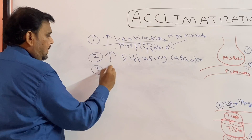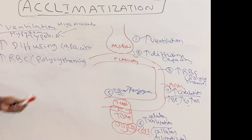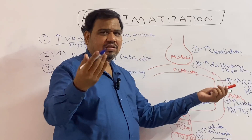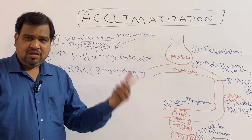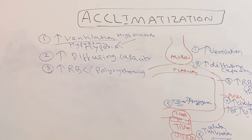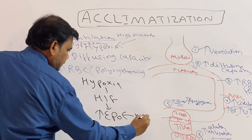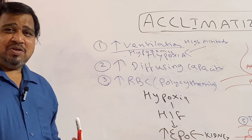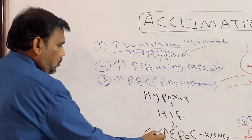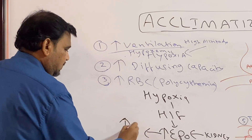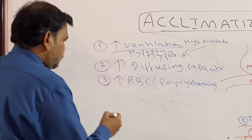Coming to the third point — RBC production, which is polycythemia. RBC production is increased; once RBC is increased, hemoglobin increases, because hemoglobin is the pigment present within the RBC, so oxygen-carrying capacity is increased. Why is RBC production increased? Hypoxia increases the hypoxia-inducible factor, which stimulates erythropoietin production from the kidney. Erythropoietin then stimulates erythropoiesis, causing increased RBC production — polycythemia.